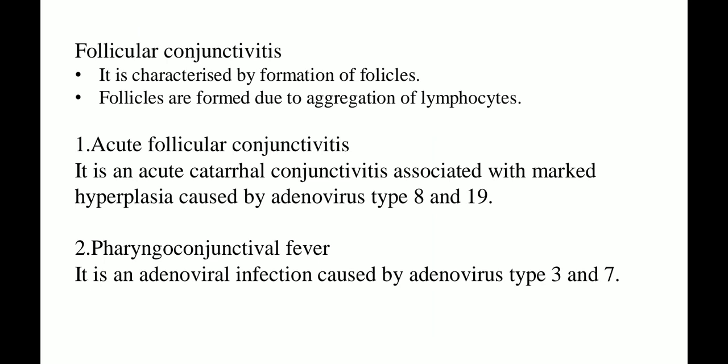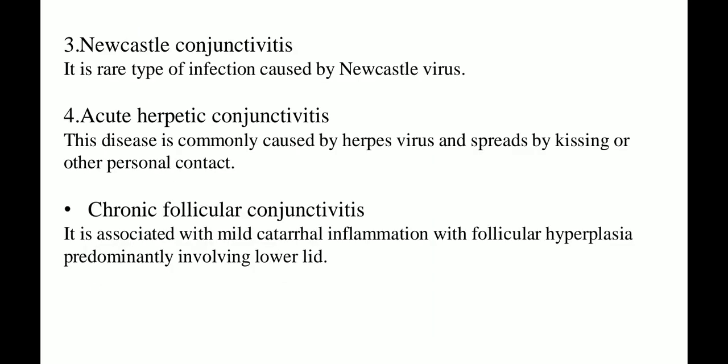The first subtype is acute follicular conjunctivitis — an acute catarrhal conjunctivitis associated with marked hyperplasia, caused by adenovirus type 8 and 19. Next is pharyngoconjunctival fever, an adenoviral infection caused by adenovirus type 3 and 7. Then Newcastle conjunctivitis, a rare type of infection caused by Newcastle virus. Finally, acute herpetic conjunctivitis, commonly caused by herpes virus and spread by kissing or other personal contact.